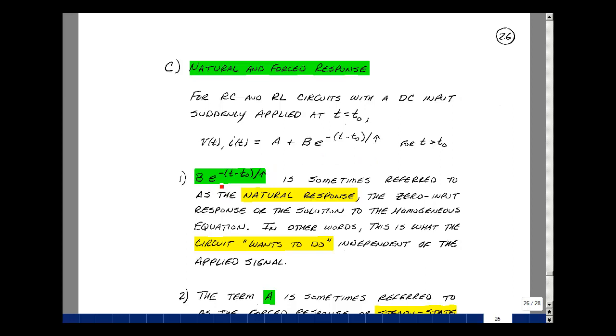The term B times e to the minus quantity T minus T0 over tau is sometimes referred to as the natural response or the zero input response or the solution of the homogeneous equation. What this indicates is what the circuit wants to do independent of the signal that's applied.